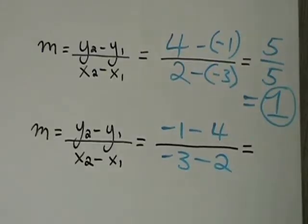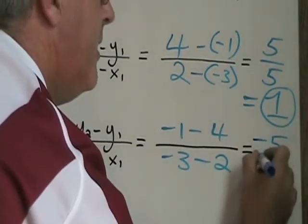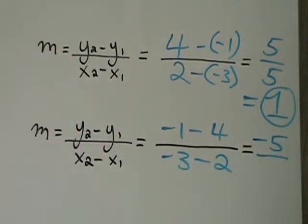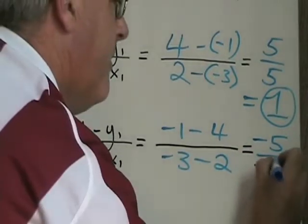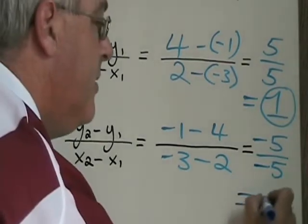What happens is my numerator becomes negative 1 minus 4, which is negative 5. My denominator becomes negative 3 minus 2, which is negative 5. And negative 5 over negative 5 also simplifies to equal 1.